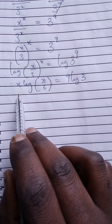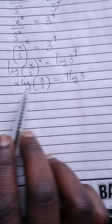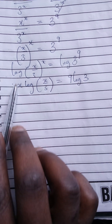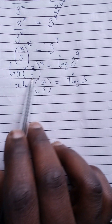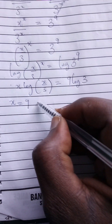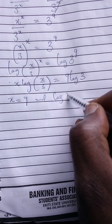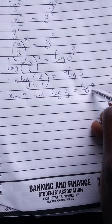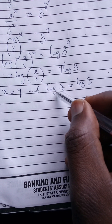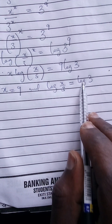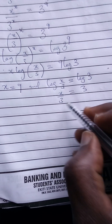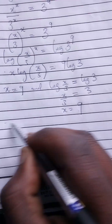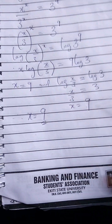From here you can compare the logs and discover that x is actually equal to 9, and log of s over 3 is equal to log 3. So you can equate inside the logs: s over 3 equals 3, therefore s equals 9. So both x and s are equal to 9.